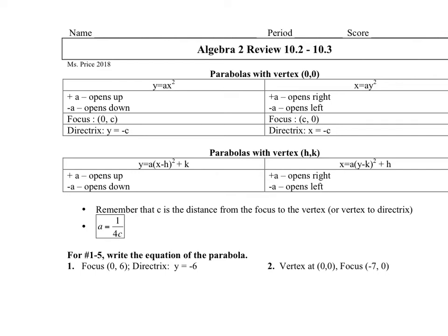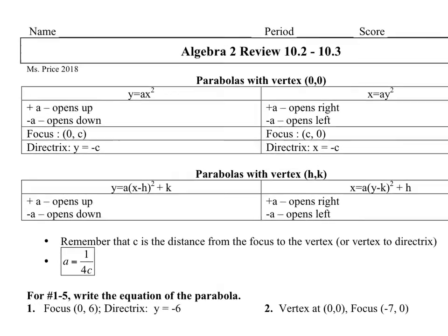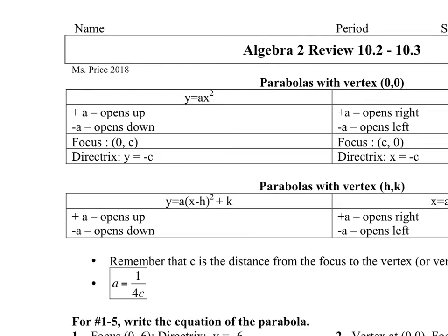All of your formulas are on here that you need to know. A parabola with vertex at zero zero — if it's the equation y equals ax squared — it's either going to open up if your a value is positive, or it will open down if a is negative. The focus is at zero C, and the directrix is a horizontal line at y equals negative C.